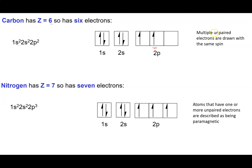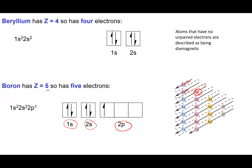If you have multiple unpaired electrons they're always going to be spin up. An atom with one or more unpaired electrons is described as paramagnetic and will be attracted to a magnet. If it has no unpaired electrons it is described as diamagnetic and won't stick to a magnet.